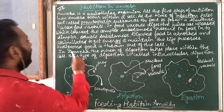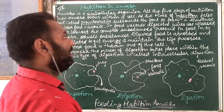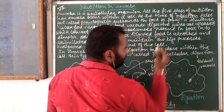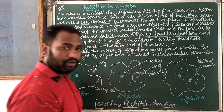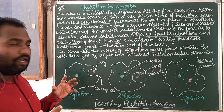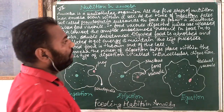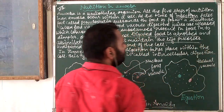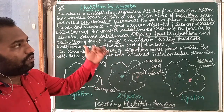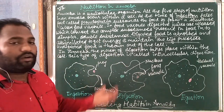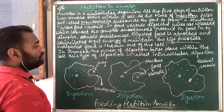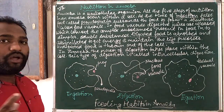Digested food is absorbed and assimilated to get energy and maintain the life process. When food is ingested, it is digested, then absorbed, and then assimilated — meaning collected to get energy and maintain life processes such as growth, development of body, reproduction, and circulation. All living activities can be done by living organisms. Amoeba is also a living organism, but a unicellular one with only one cell.